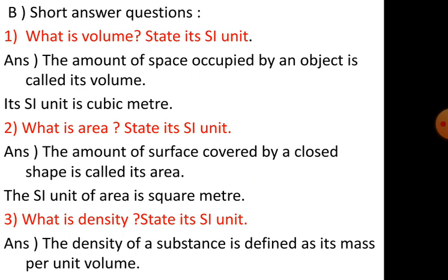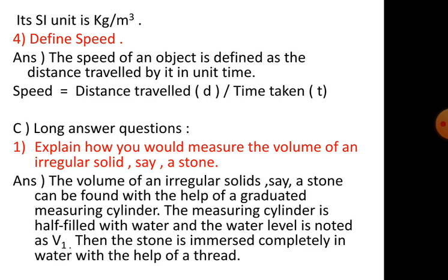Question 2: what is area? State its SI unit. The amount of surface covered by a closed shape is called its area. The SI unit of area is square meter. Question 3: what is density? State its SI unit. The density of a substance is defined as its mass per unit volume. Its SI unit is kg per meter cube.